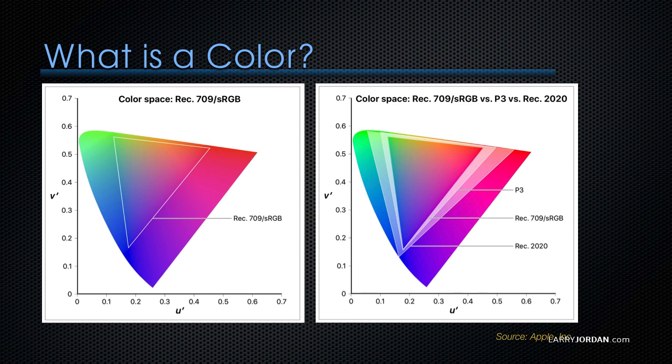The outer triangle is Rec. 2020. That's where we're headed. Even more saturation in the reds, even more saturation in the greens, a little bit more in the blue. But you can see that even with these new standards, we're still not equaling what the eye can see. But it's better.